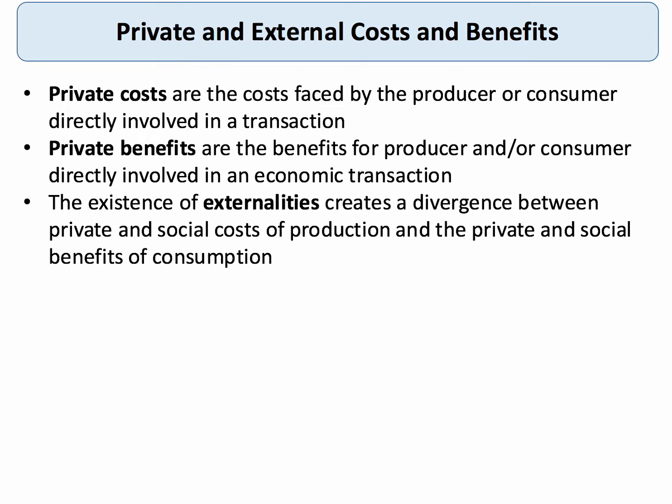Let's make a distinction between private cost and external cost, which leads on to the idea of social cost. Private cost, otherwise known as internal cost, are the costs faced by the producer or the consumer directly involved in a particular market transaction. Private benefit is the benefit to a producer — for example, revenue — or the benefit to a consumer — for example, utility or satisfaction — from those people directly involved in an economic transaction.